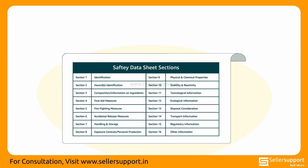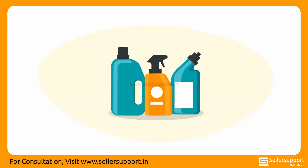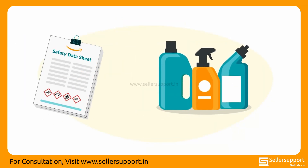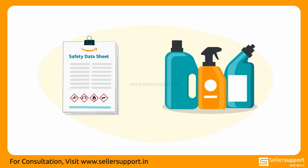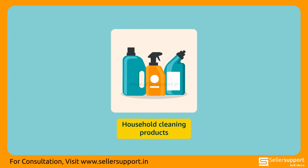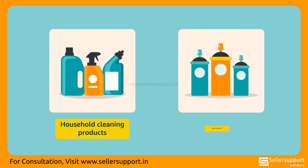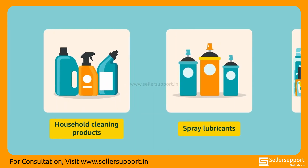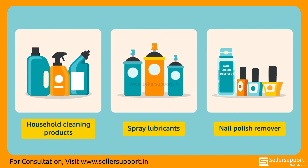Examples of products that have a safety data sheet include household cleaning products, spray lubricants, and nail polish remover.